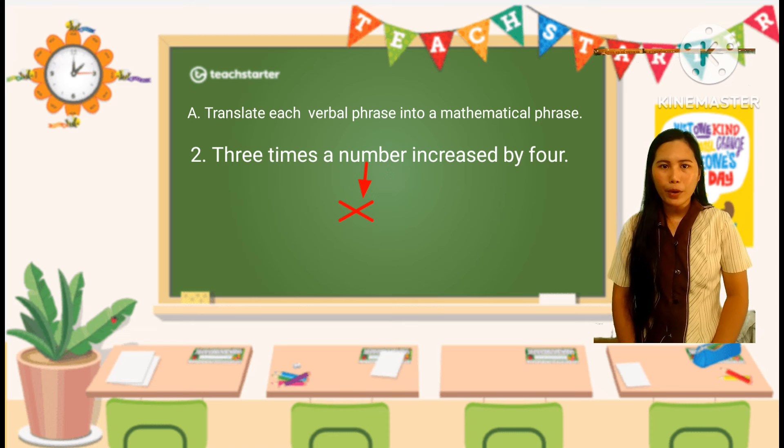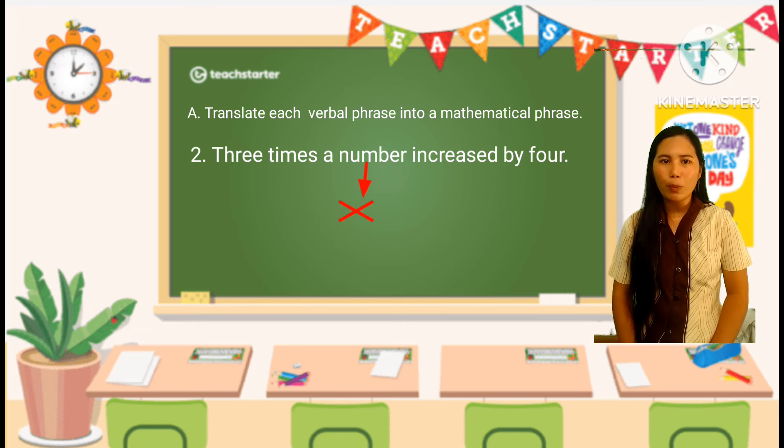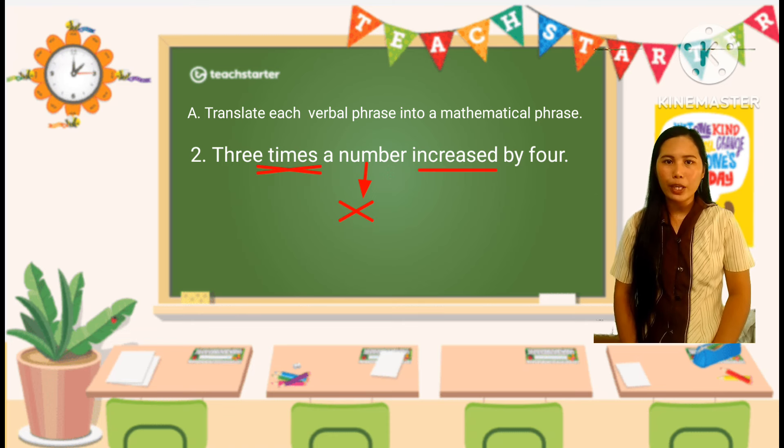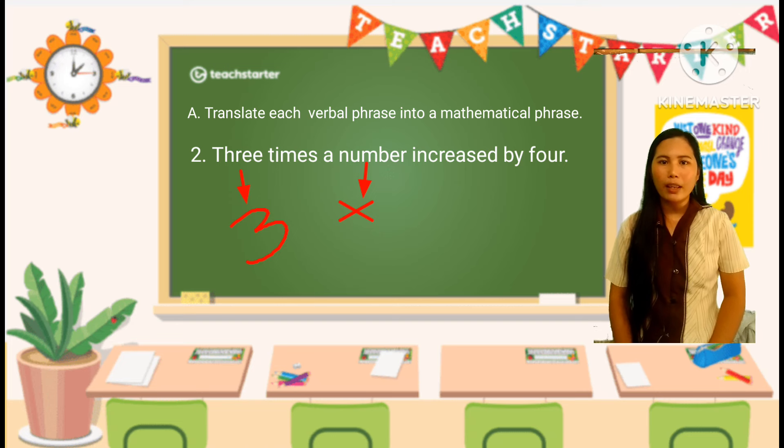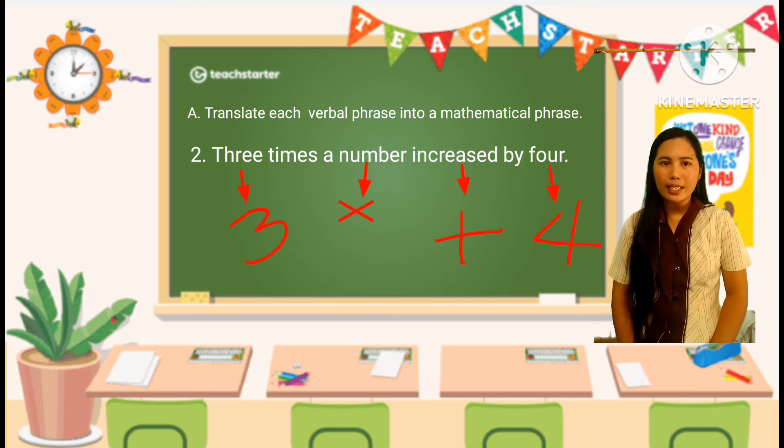Number two, determine the operations. The phrase mentions two operations: multiplication and addition. Three times a number indicates that we need to multiply the number by 3, and increased by 4 indicates that we need to add 4 to the result.